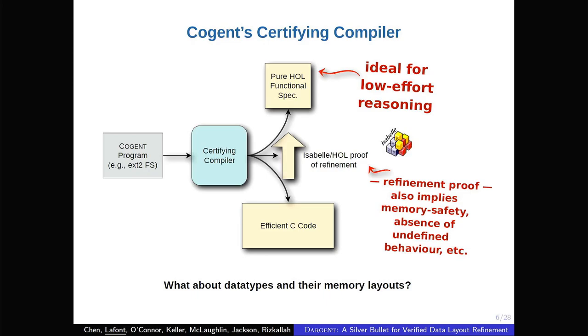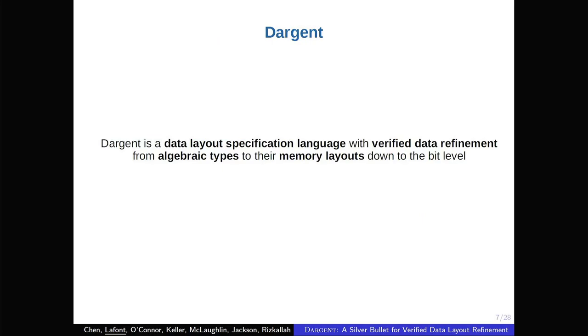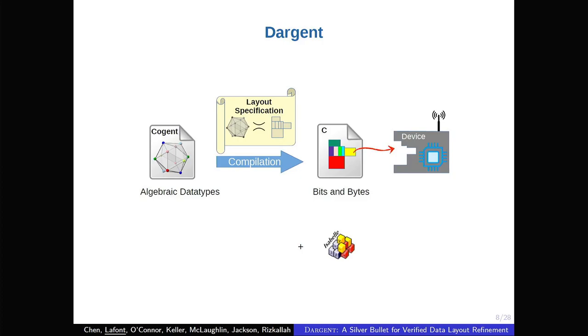So, it would be nice if we could just provide a specification for all these types, how all the Cogent types should be laid out in memory. And then the compiler would take care of this for us. And we just remain at the abstract level when reasoning or when implementing Cogent programs. And this is our extension Dargent. So, it's a data layout specification language in which you can specify the specific layouts for your types. And it comes with formal guarantees.